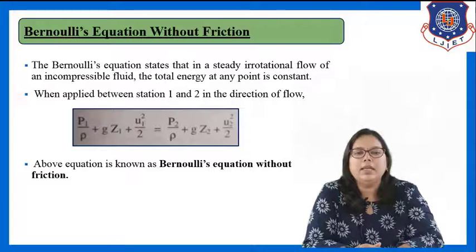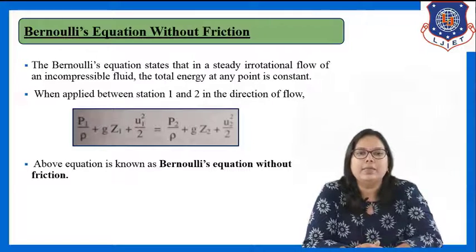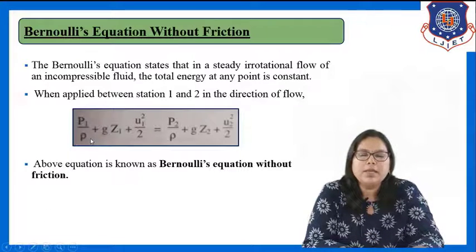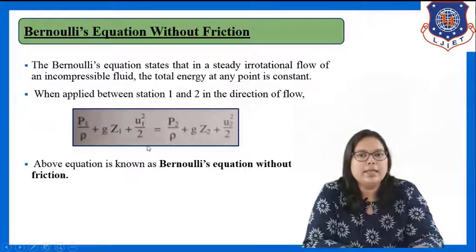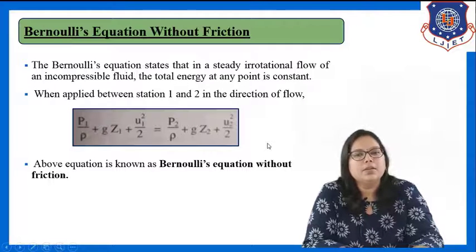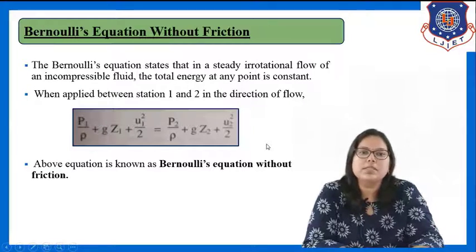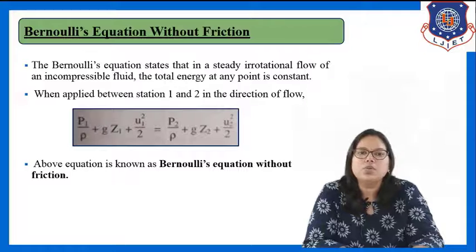If I have to write Bernoulli's equation between two points 1 and 2, I can write it as: p1/ρ + gz1 + u1²/2 = p2/ρ + gz2 + u2²/2. This equation says that total energy at point 1 and point 2 will remain constant. This is known as Bernoulli's equation without friction.